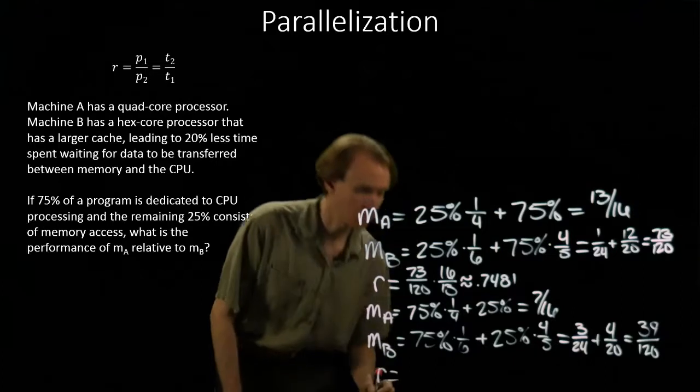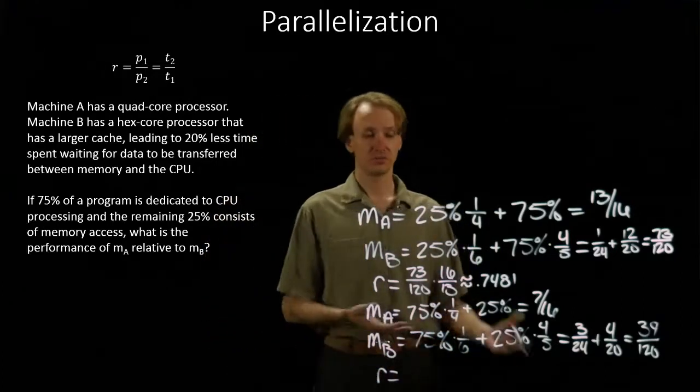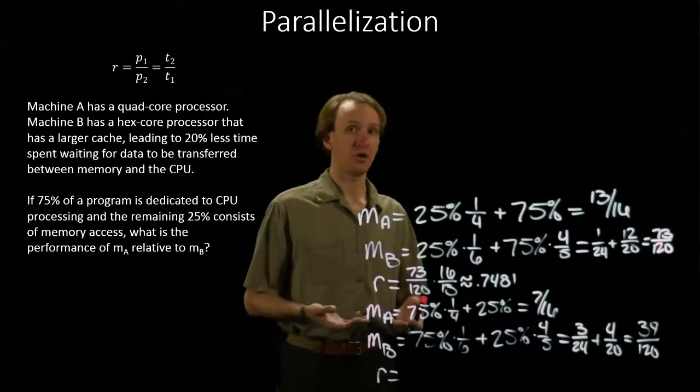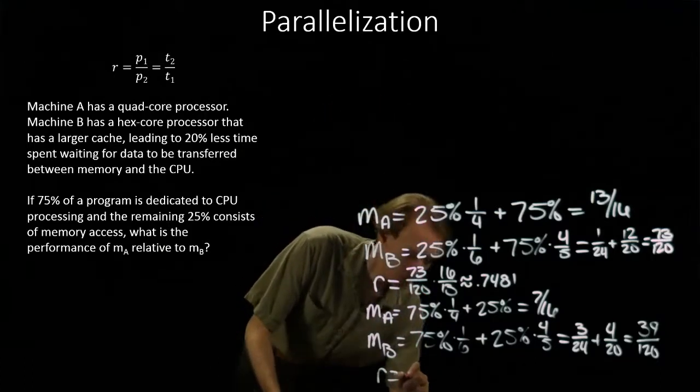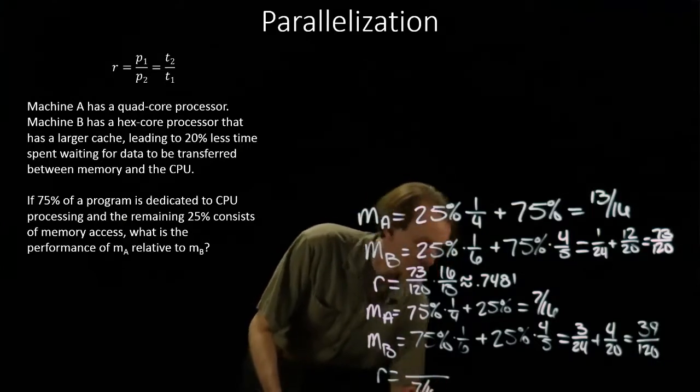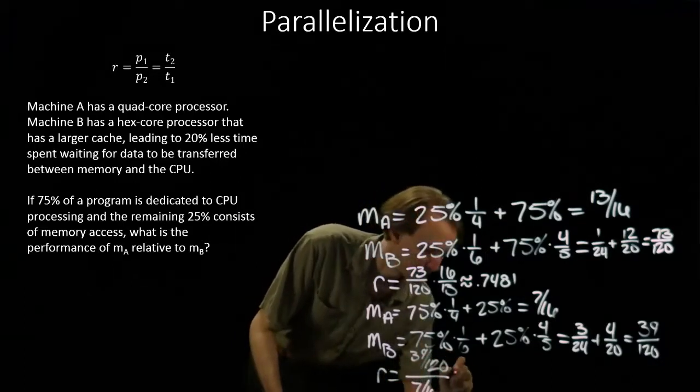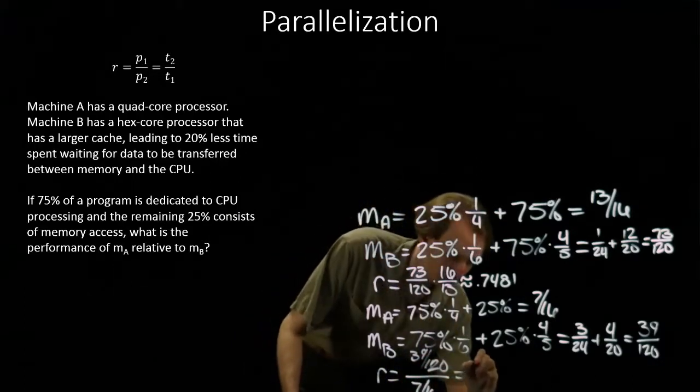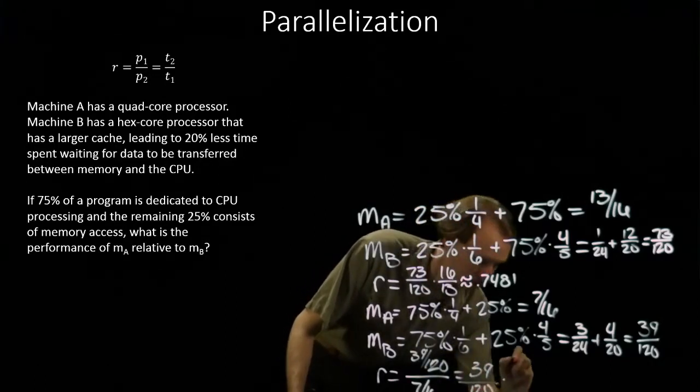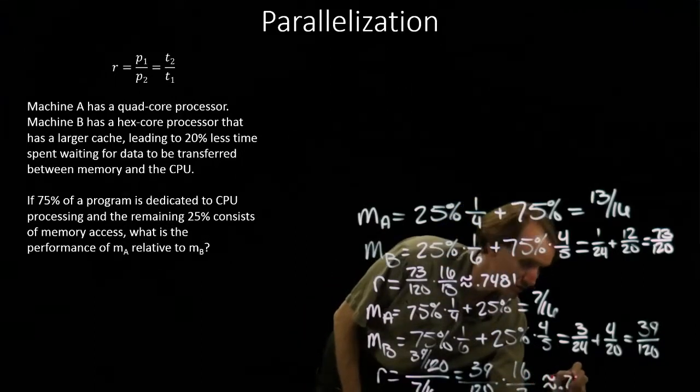So the relative performance ratio here. Again, we're looking at the performance of machine A relative to machine B. So we're going to take the time for machine A on the bottom and the time for machine B on the top of our equation. So machine A gave me seven-sixteenths. And I have thirty-nine-one-twenty, which is equal to twenty times sixteen over seven, which is about .7428.